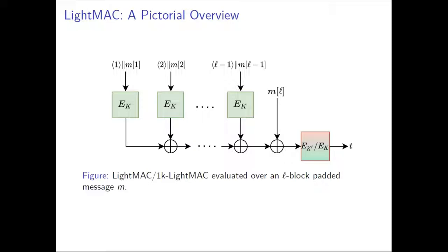The final input is fed into E_{K'} for two-key LightMAC. For single-key LightMAC, the final block cipher is the same as the initial block cipher — it is just E_K. And L is the number of blocks present in the padded message M.